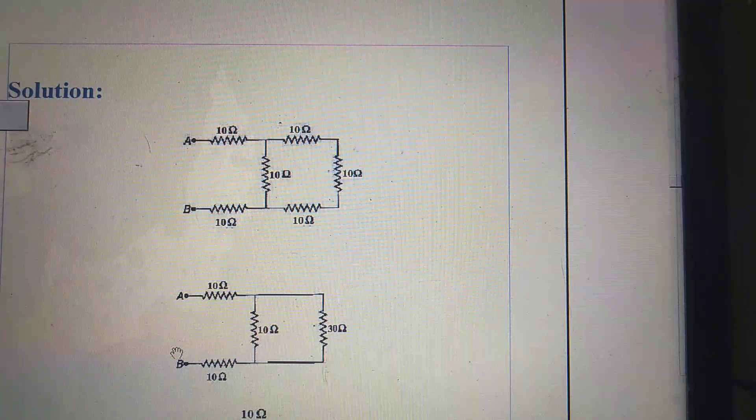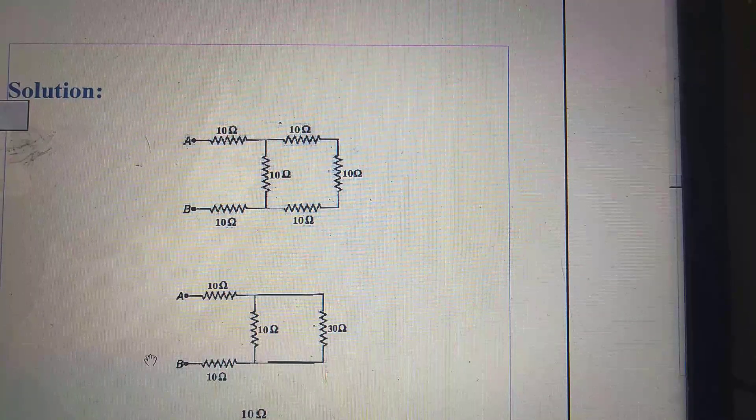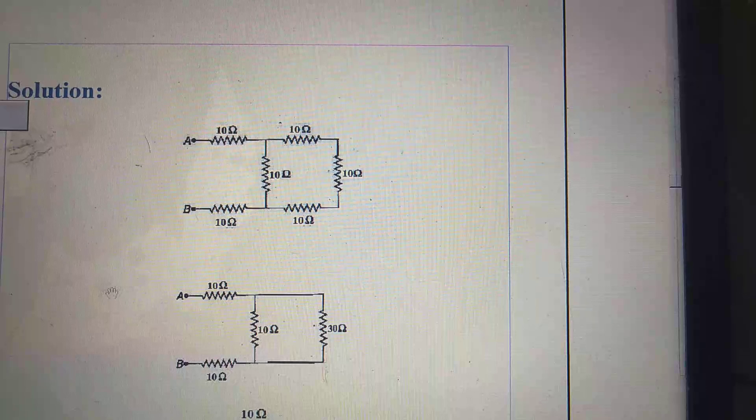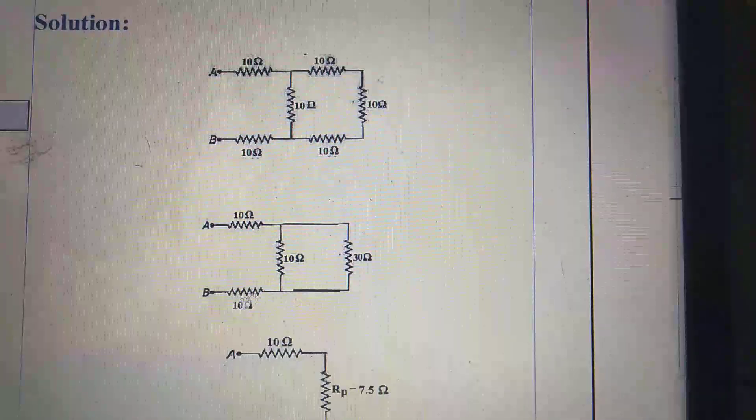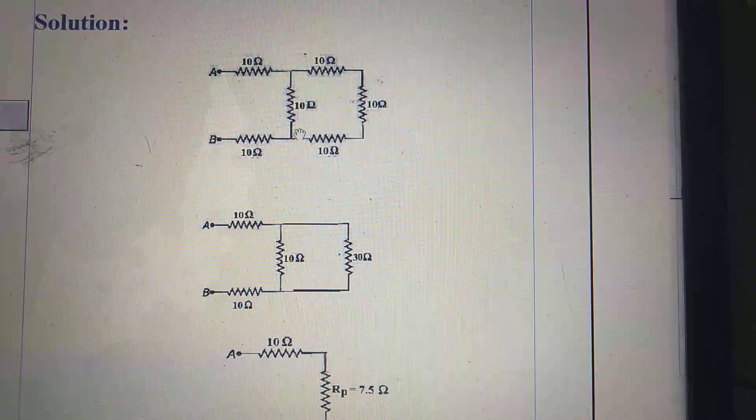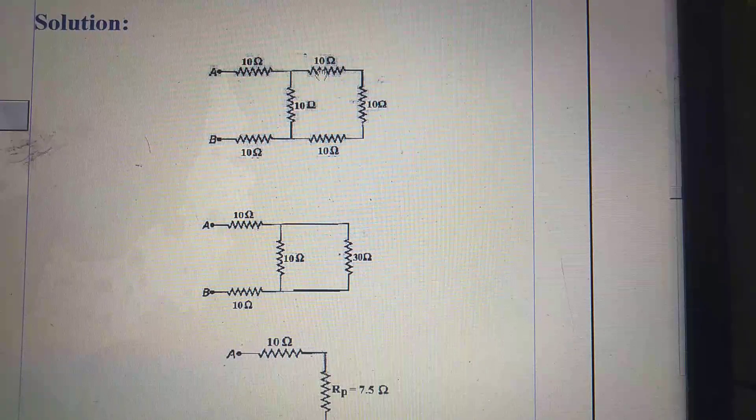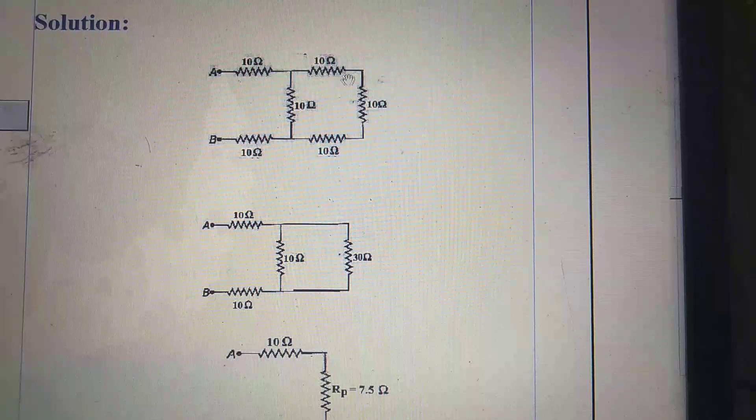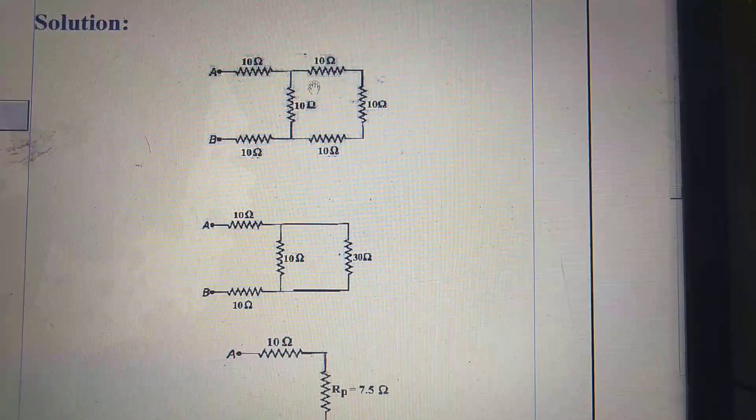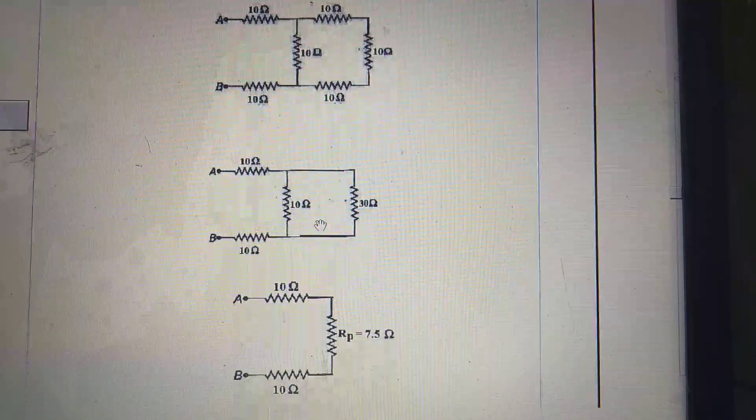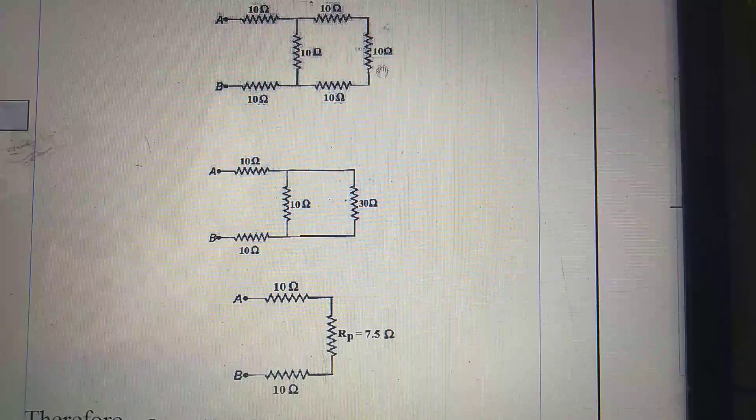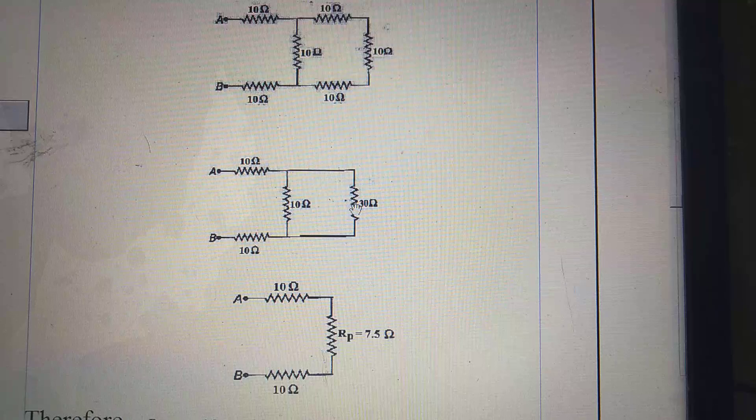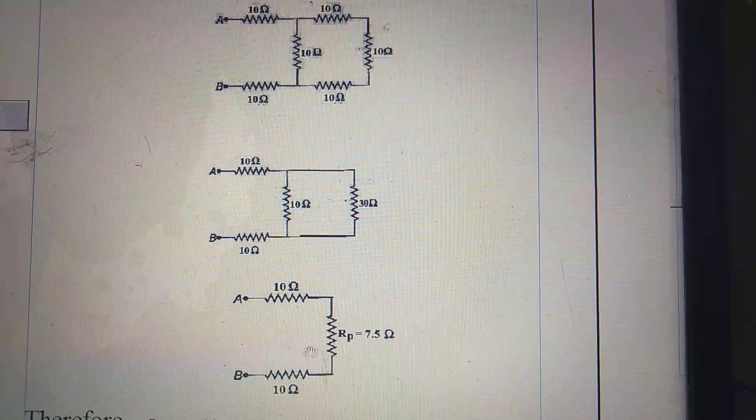Let's see the solution. We drop this extreme right part, 10 ohm, 10 ohm. After that, we get this circuit. Here, 10 ohm, 10 ohm, 10 ohm. These three resistances are in series. So, in the next circuit, these three resistances will give you 30 ohm. This 30 ohm and this 10 ohm are in parallel.